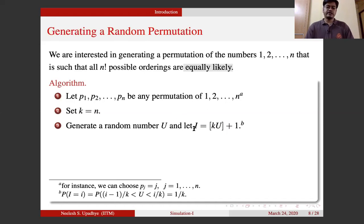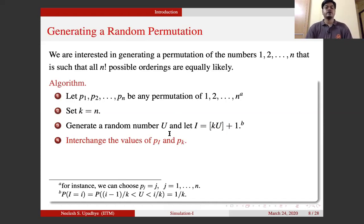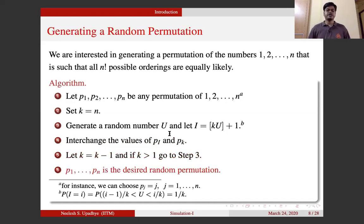Once position i is chosen, we swap the values p_i and p_k. If k = n, we swap p_i and p_n, so the value at position n switches to the value at the randomly chosen position i. Then we set k = k − 1 and if k > 1 we go back and repeat: generate a new U, get a new i from the k-point set, interchange p_i and p_k, and continue until k = 1. The resulting permutation p1, p2, ..., pn is the desired random permutation.